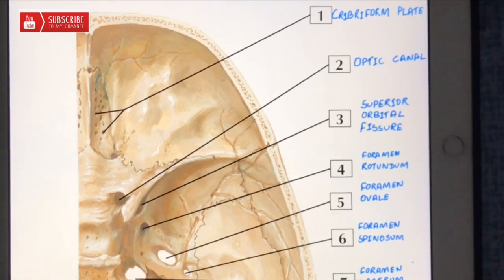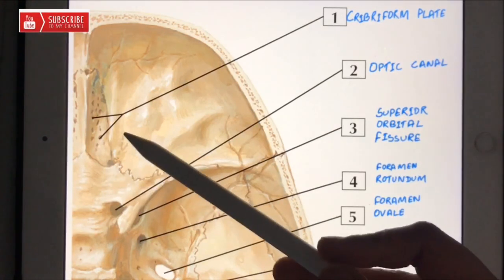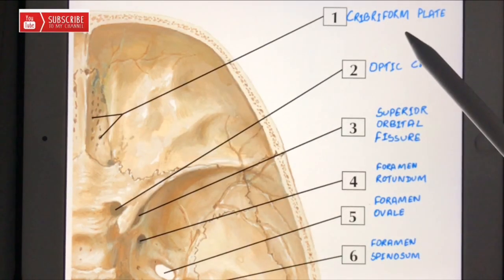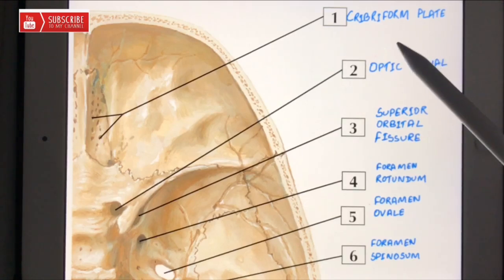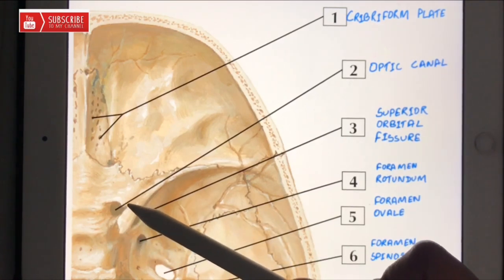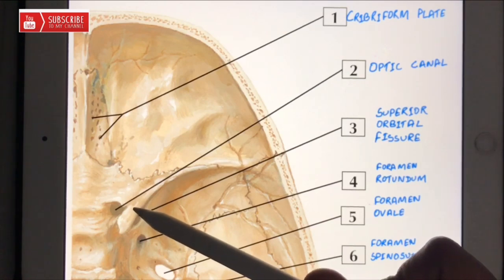Number one is the cribriform plate, and through the cribriform plate the first cranial nerve, which is the olfactory nerve, passes. Number two is the optic canal, and through the optic canal the second cranial nerve, which is the optic nerve, as well as the ophthalmic artery passes.